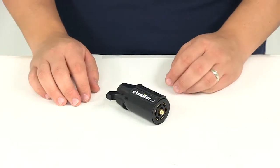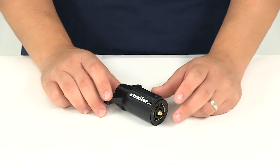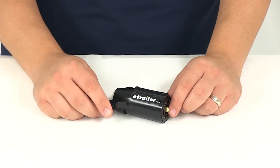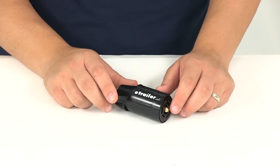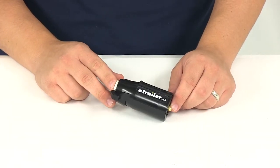Today we'll be reviewing part number PK-12706, the Pollock Black Plastic 7-Pole RV-Style Trailer Connector. This is a standard 7-pole plug that connects the trailer to your socket on your tow vehicle.